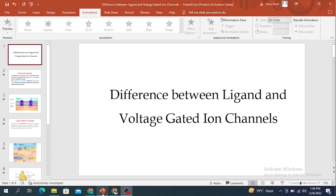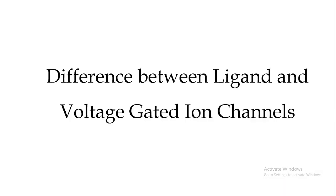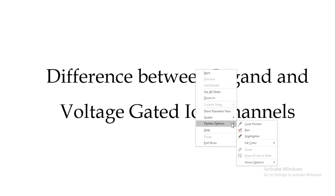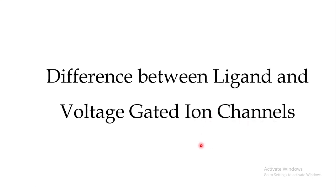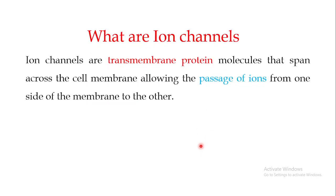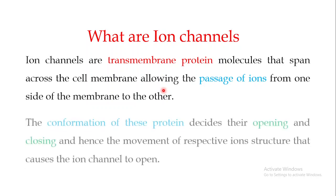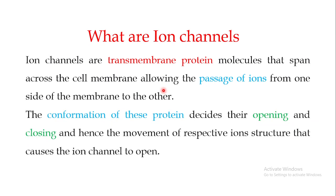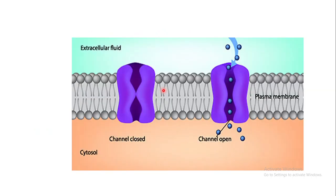Welcome back to this next video, which is the second in the series on the differences between ligand-gated and voltage-gated ion channels. In the previous video, I told you that ion channels are transmembrane protein molecules that span across the cell membrane, allowing the passage of ions from one side to the other by changing their conformation, either allowing or blocking ion movement.